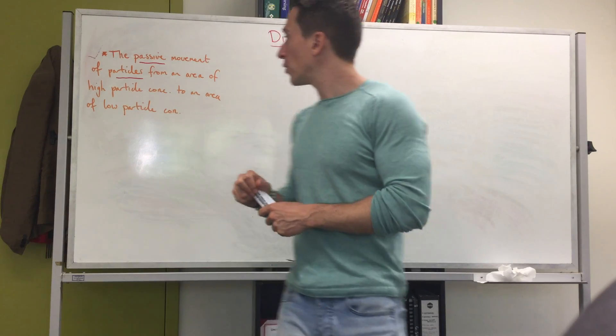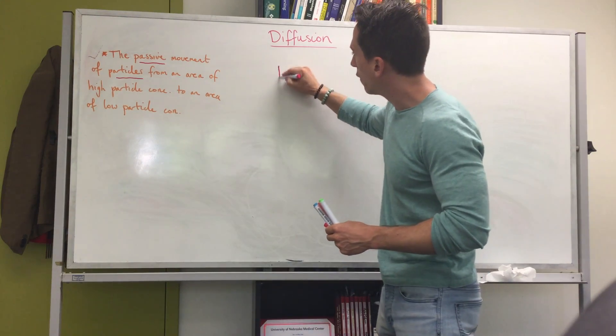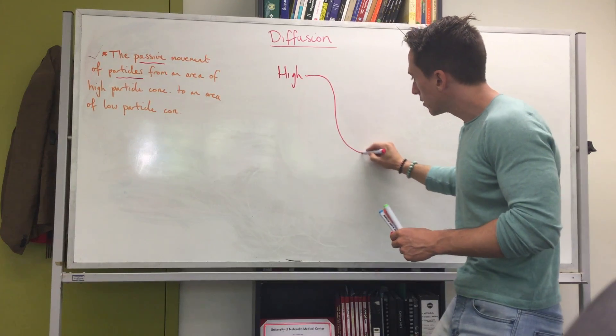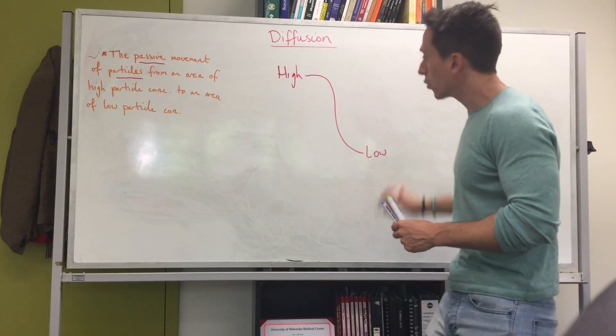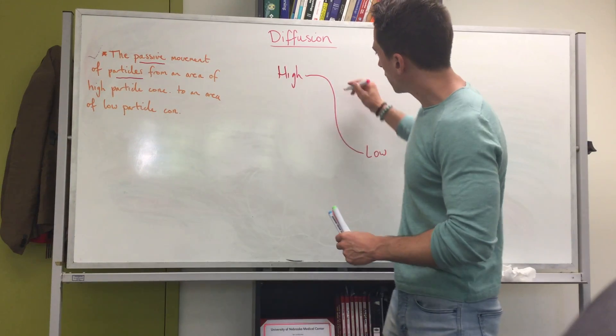Now with diffusion, because it's passive, passive movement will always go from an area of high concentration down a gradient to the area of low concentration until it's balanced out. The way I remember this is if this was a slide.